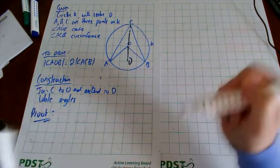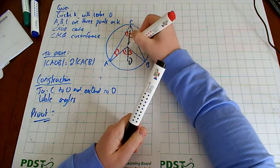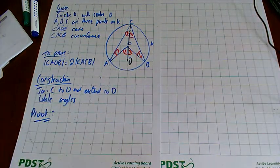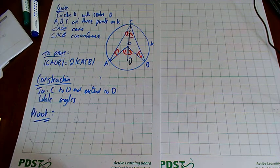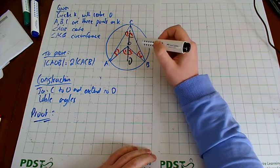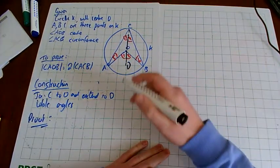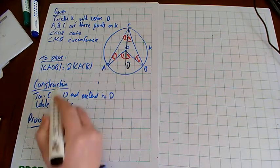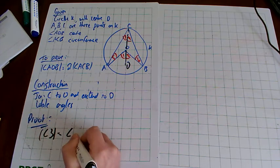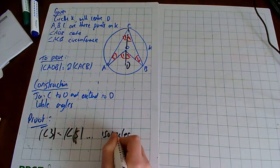I'm going to label the angles exactly like they are in the book: angles five, three, four, two, one, and six. When we split those up, we've created two isosceles triangles. So in this triangle, angle three equals angle five — it's an isosceles triangle.